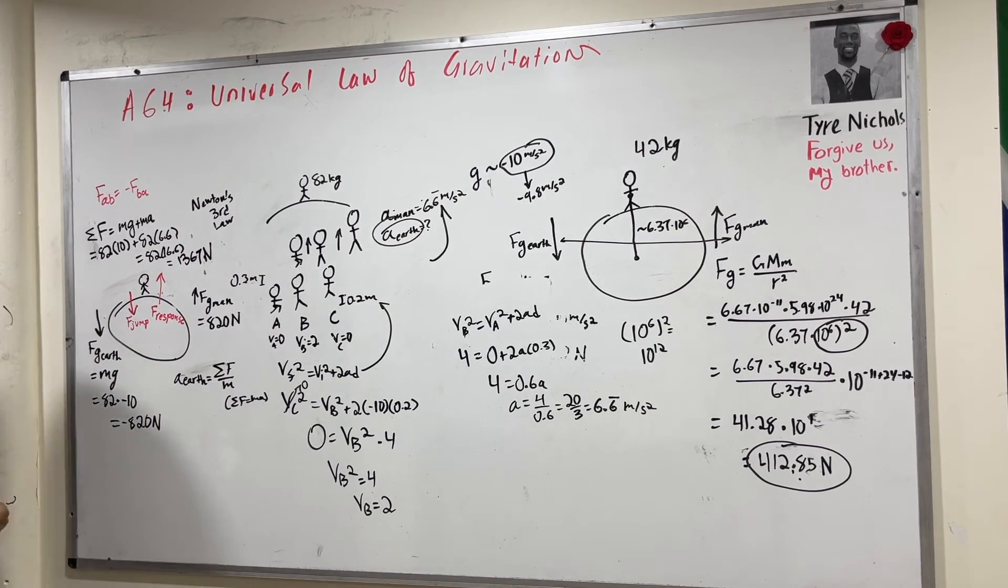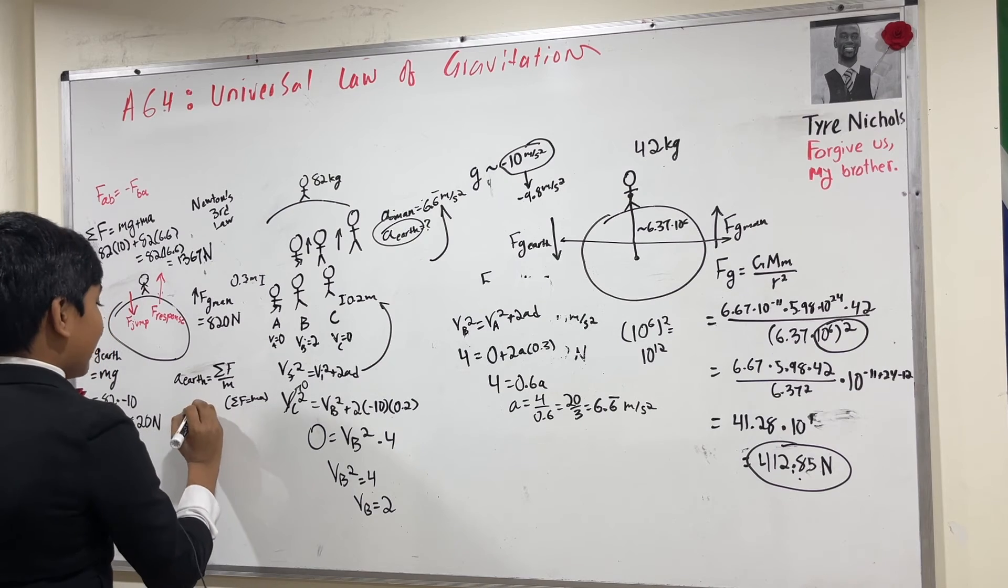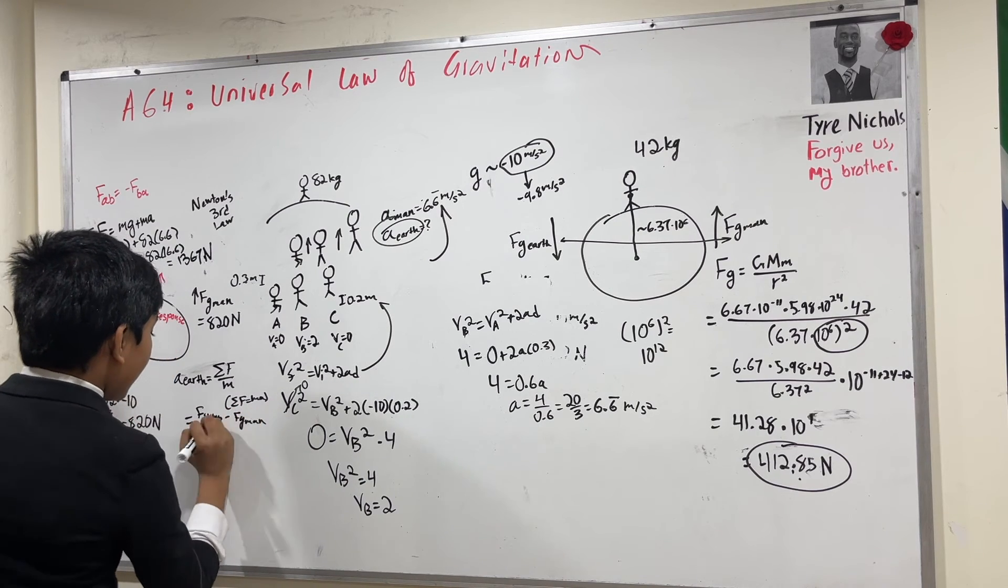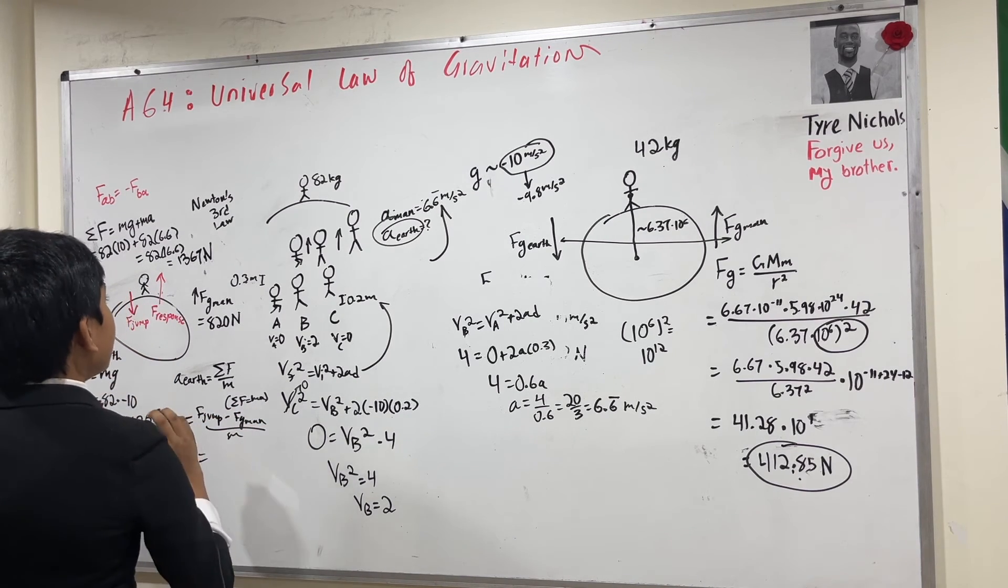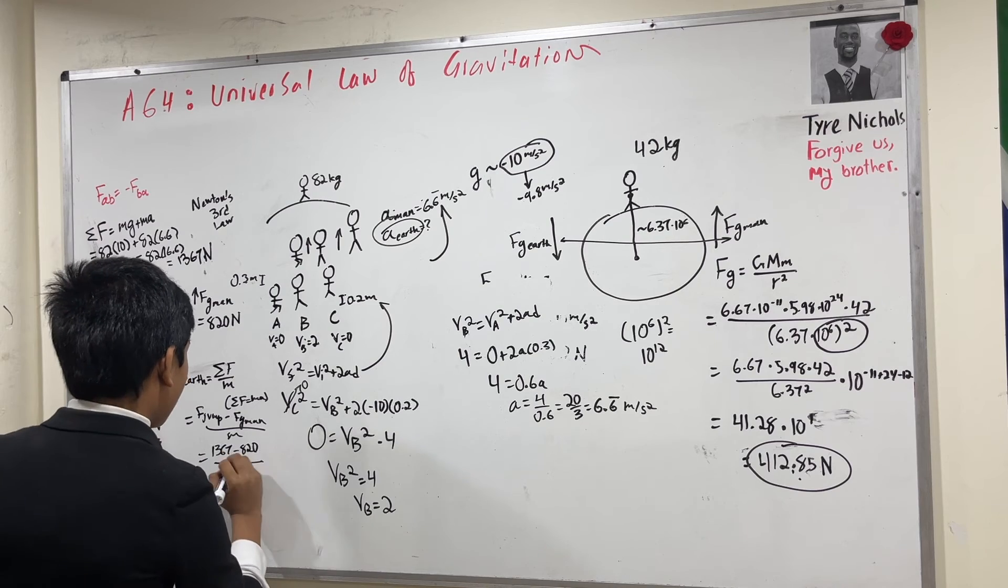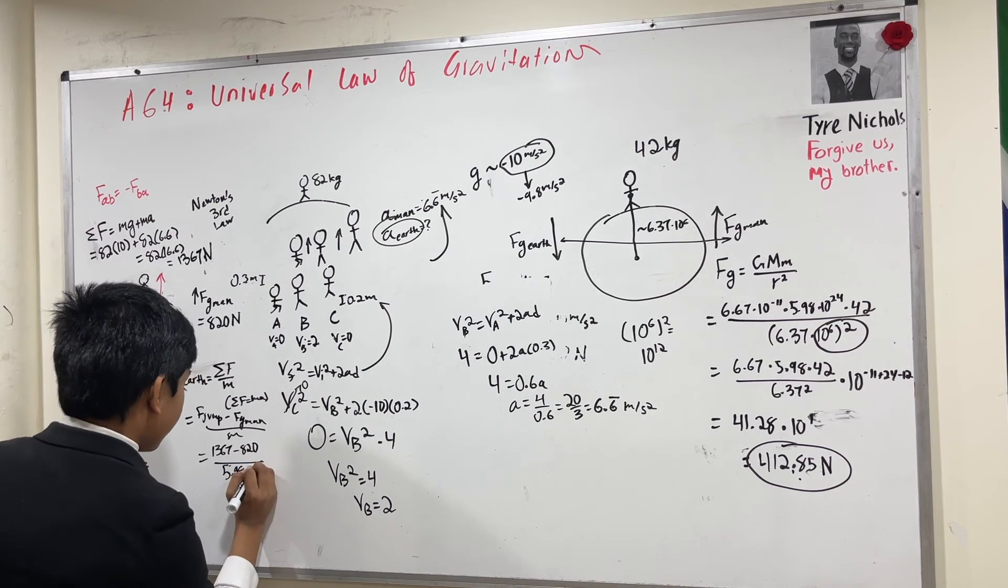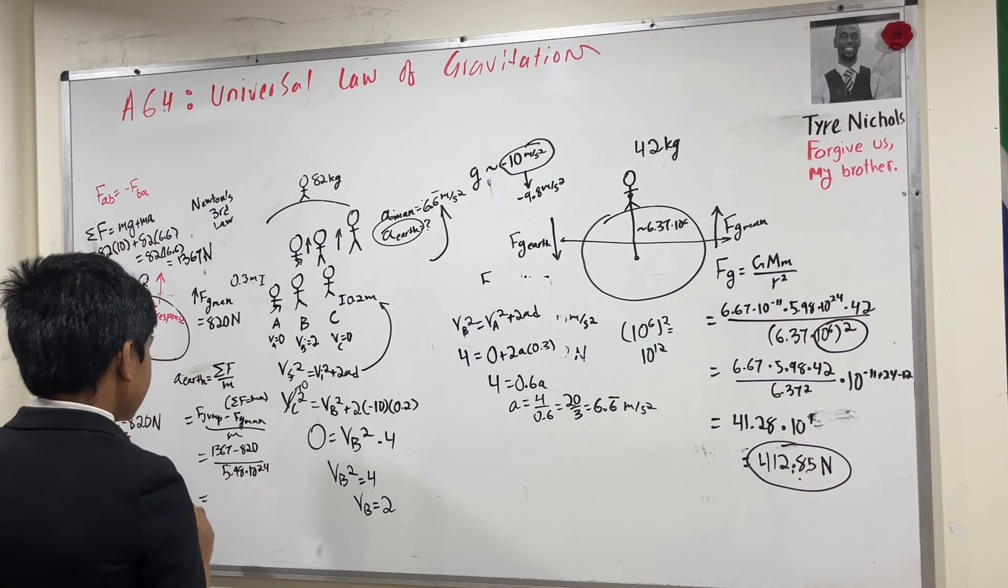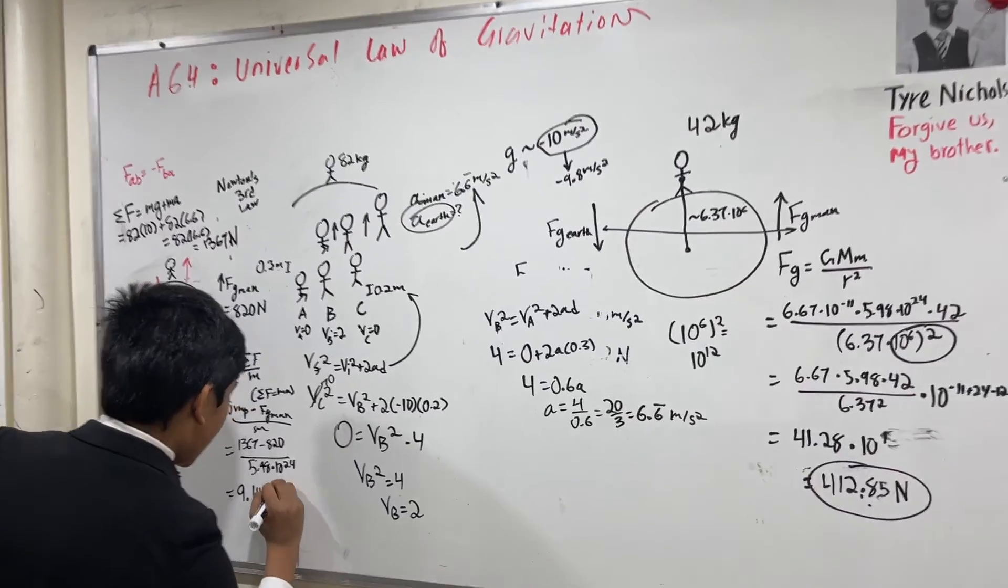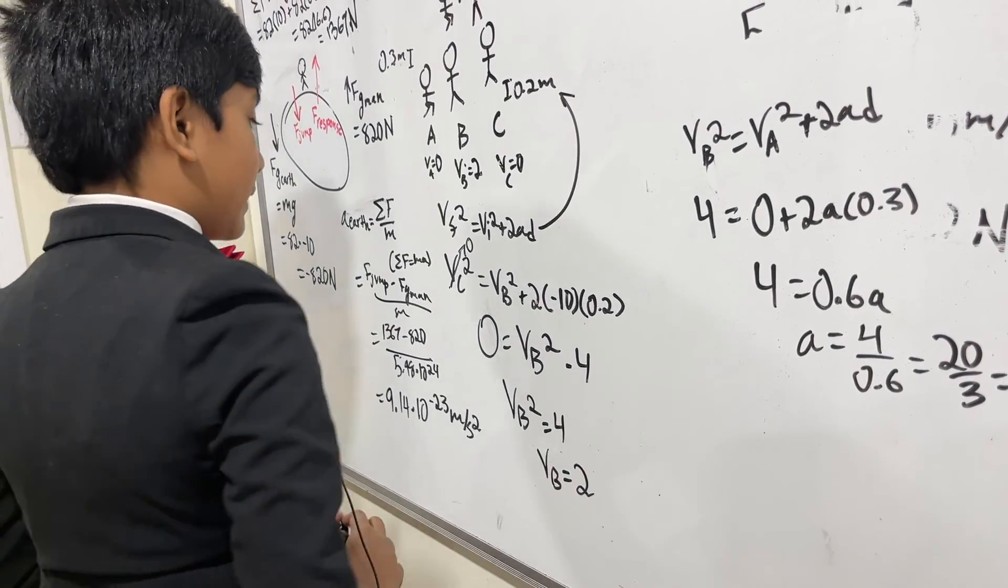So now this all comes to an end because we know F jump. So A earth, which is sigma F over M, is simply F jump minus FG man over M. So that is 1367 minus 820 divided by 5.98 times 10 to the 24th. And so this leads to an acceleration of 9.1 times 10 to the minus 23 meters per second squared.